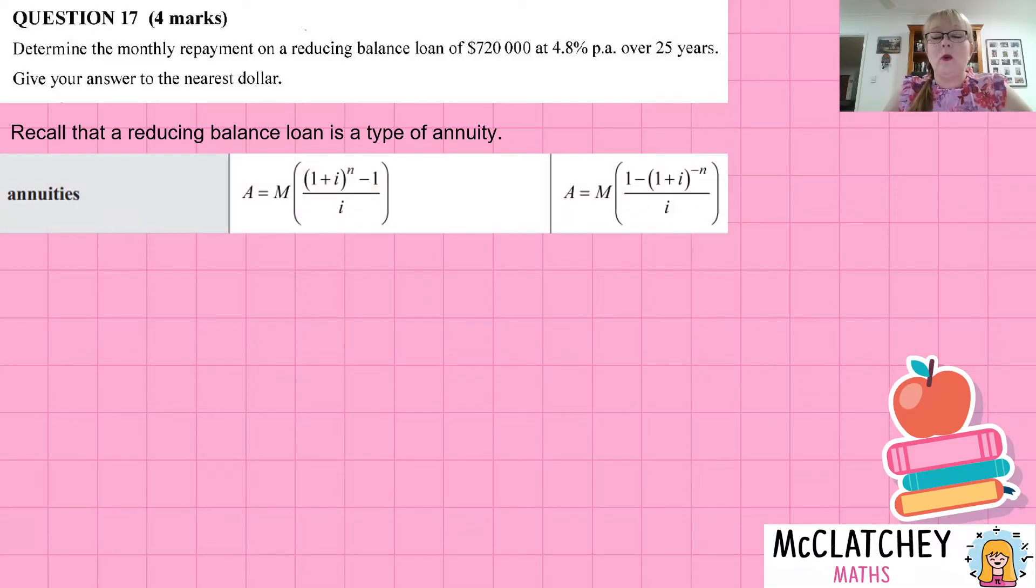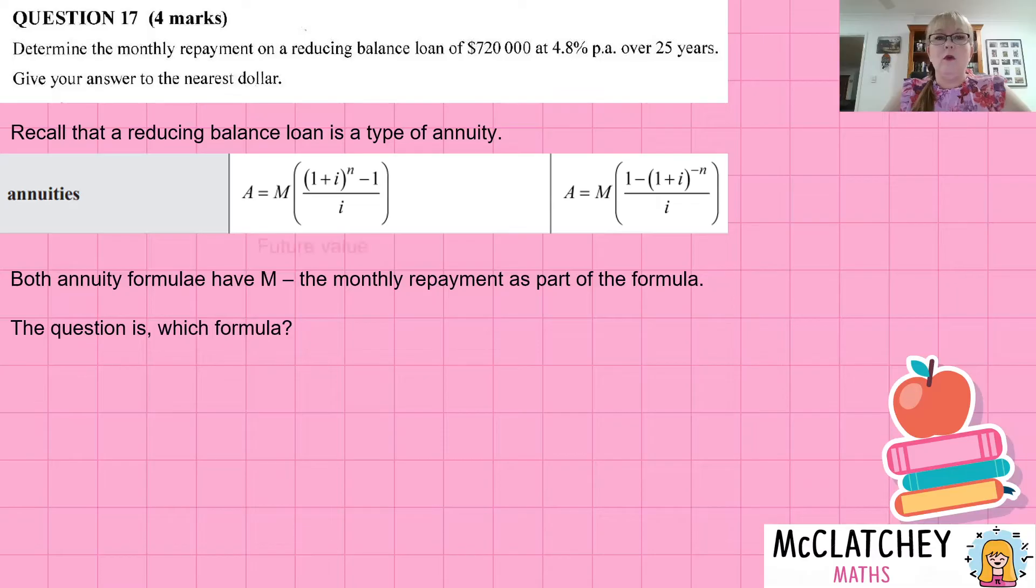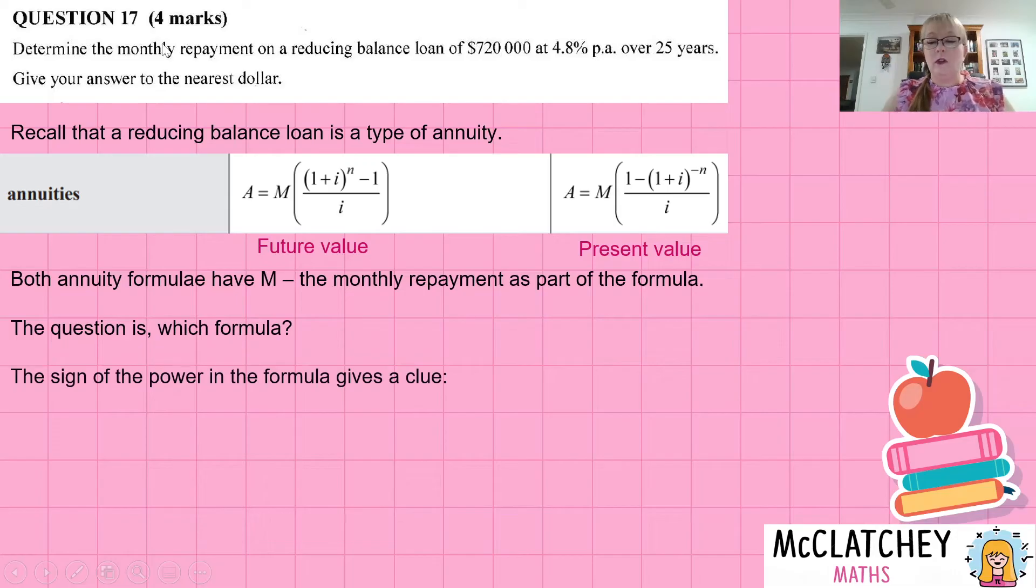So here are our two options in Queensland. We've got two formulas, and if we were to rearrange or transpose these equations, we could make M the subject, and then we could find the value of this monthly repayment. The question is though, which formula do we use? There's two to choose from. You've got a 50-50 chance of getting it right. Both of them have got M in the formula. Which formula do we go for? Well, we might remember that this one here is future value and this one's present value. The way I like to remember it is all about the indices that give us the clue.